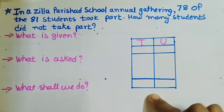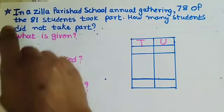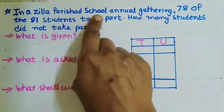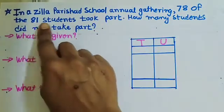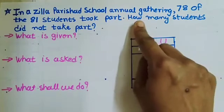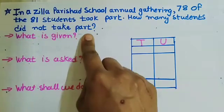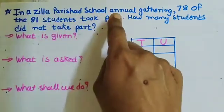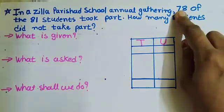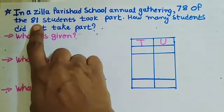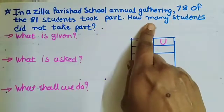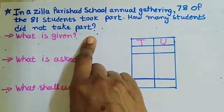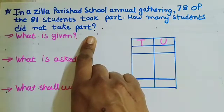Now we will understand subtraction through a word problem. Let's read: In Azila Parishad School Annual Gathering, 78 of the 81 students took part. How many students did not take part? So, from 81 students, 78 students took part in the gathering. We have to find out the number of students who did not take part in the annual gathering.